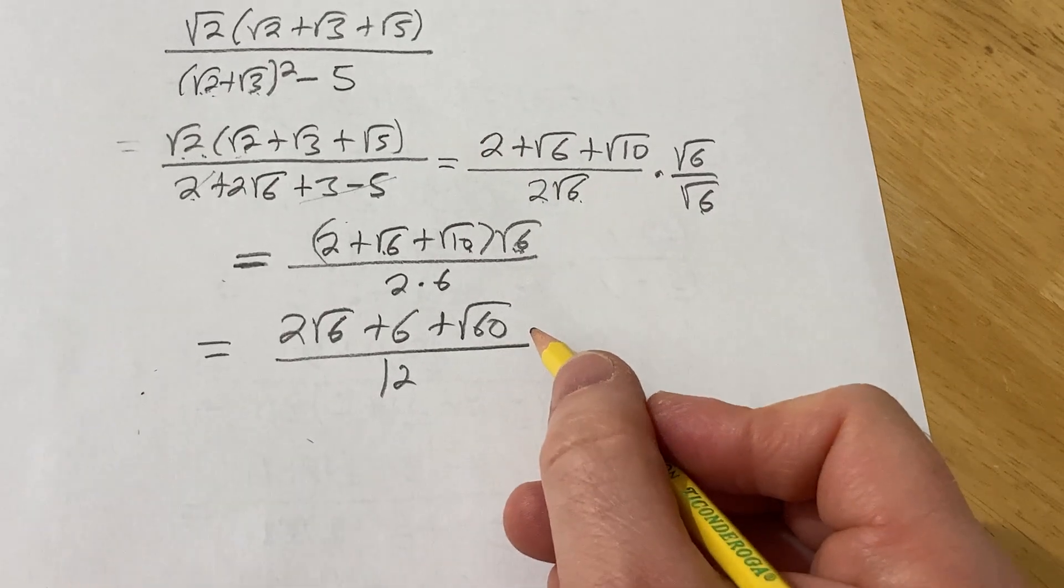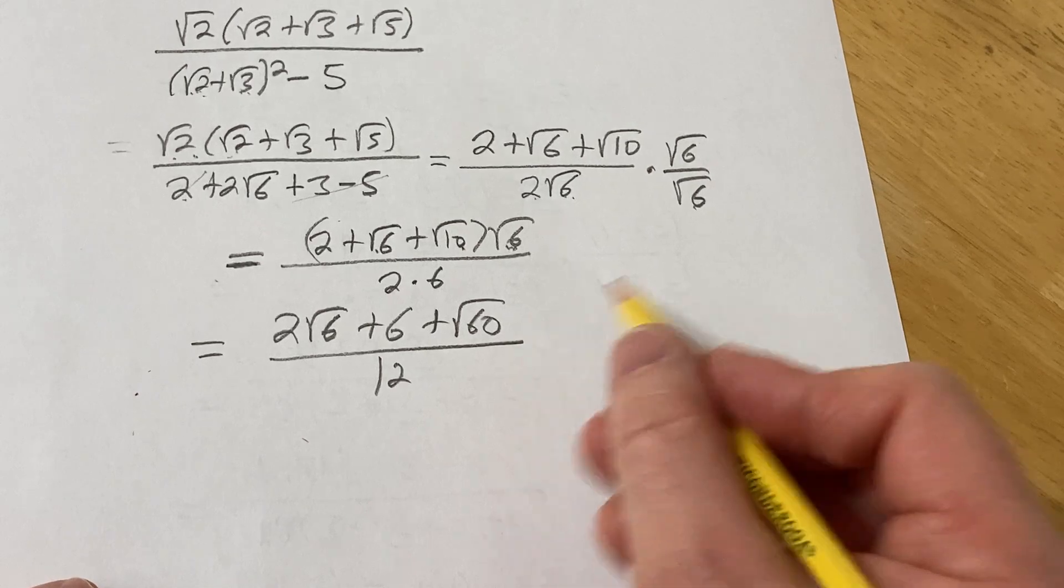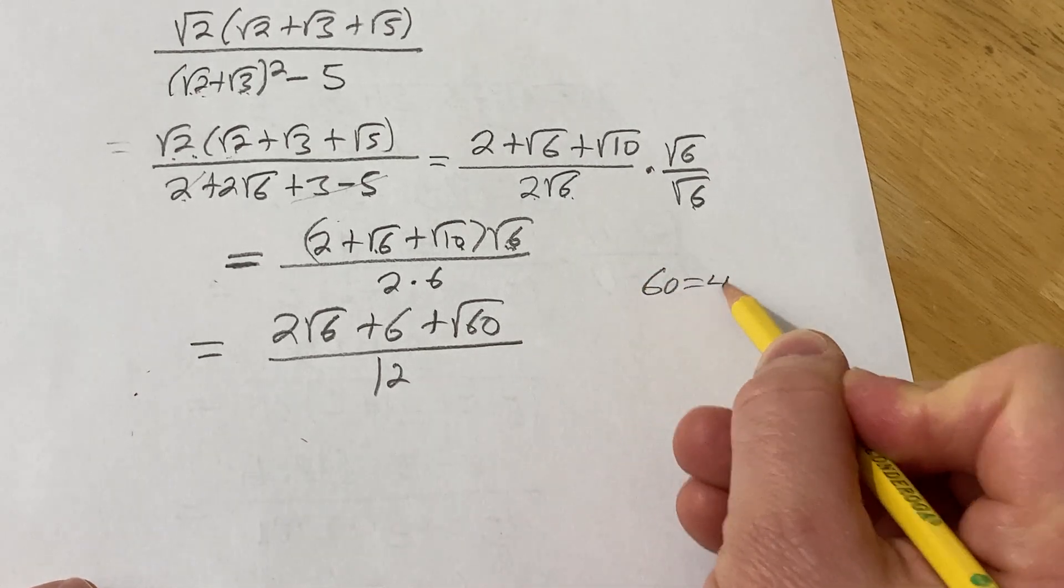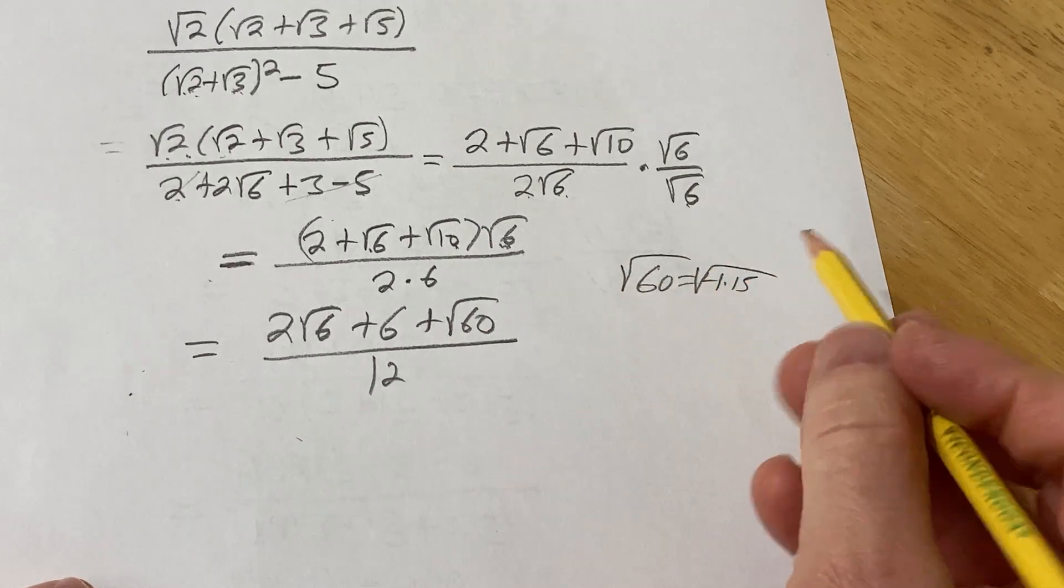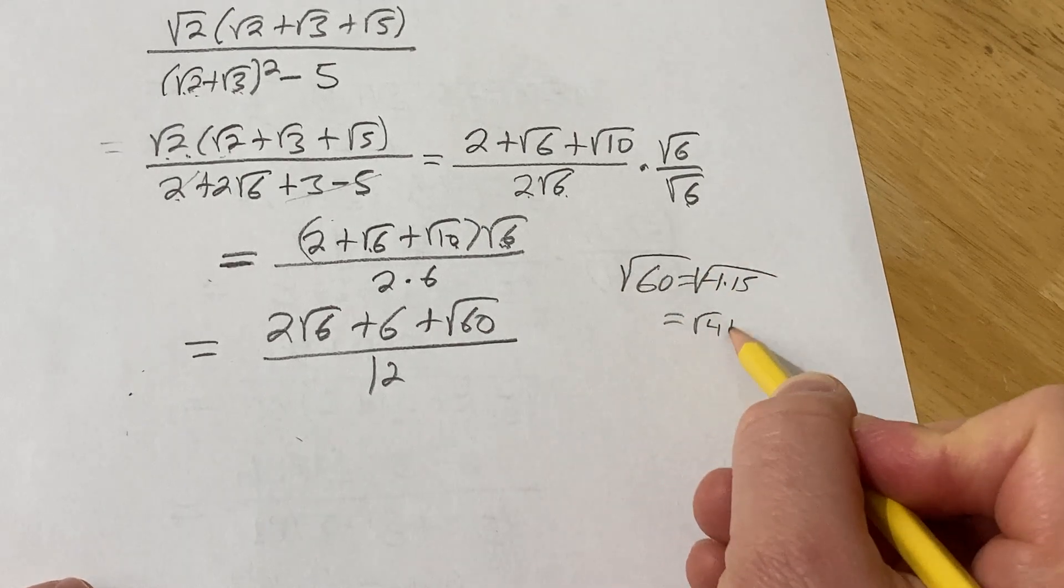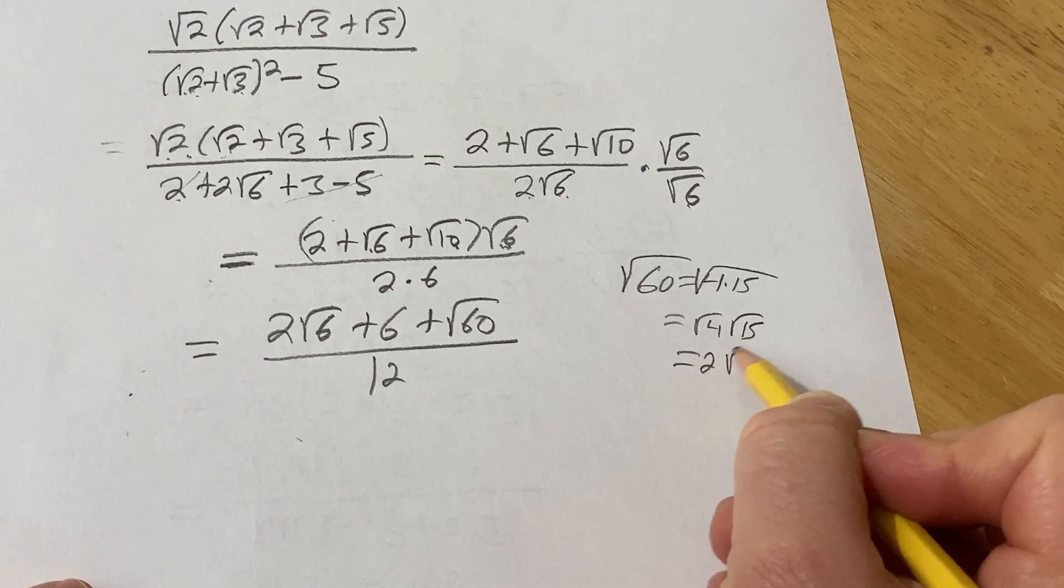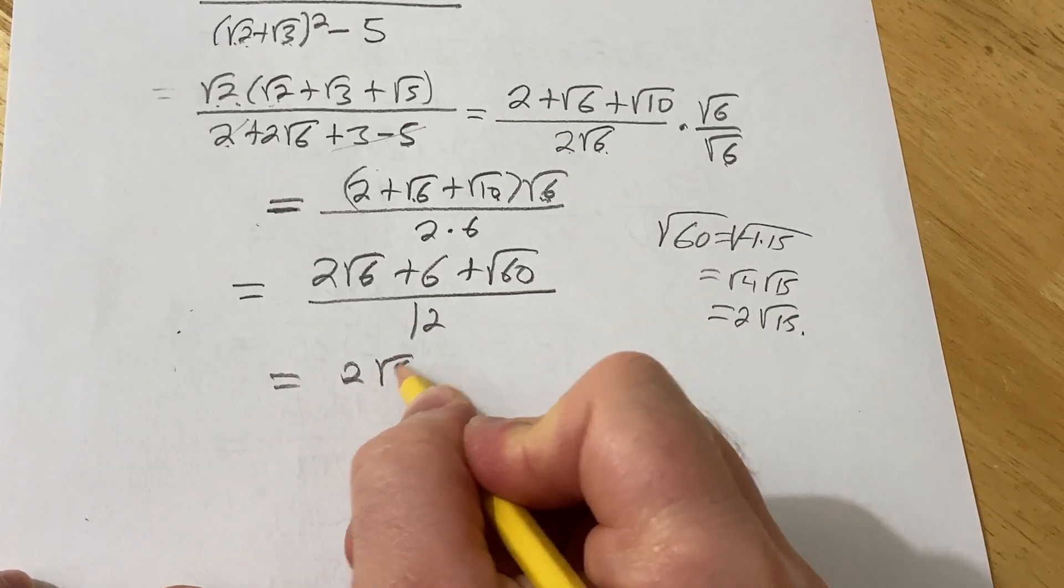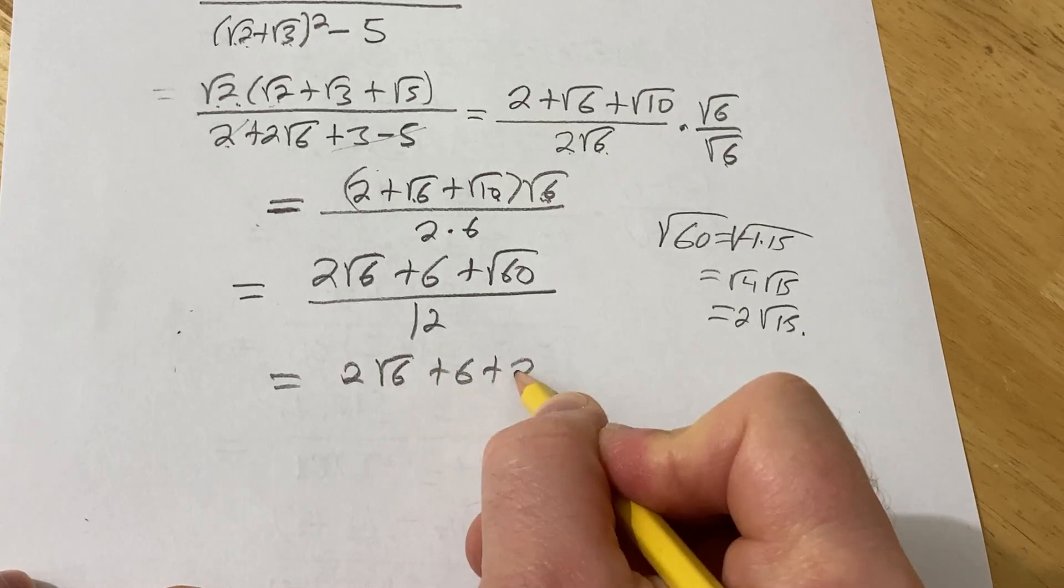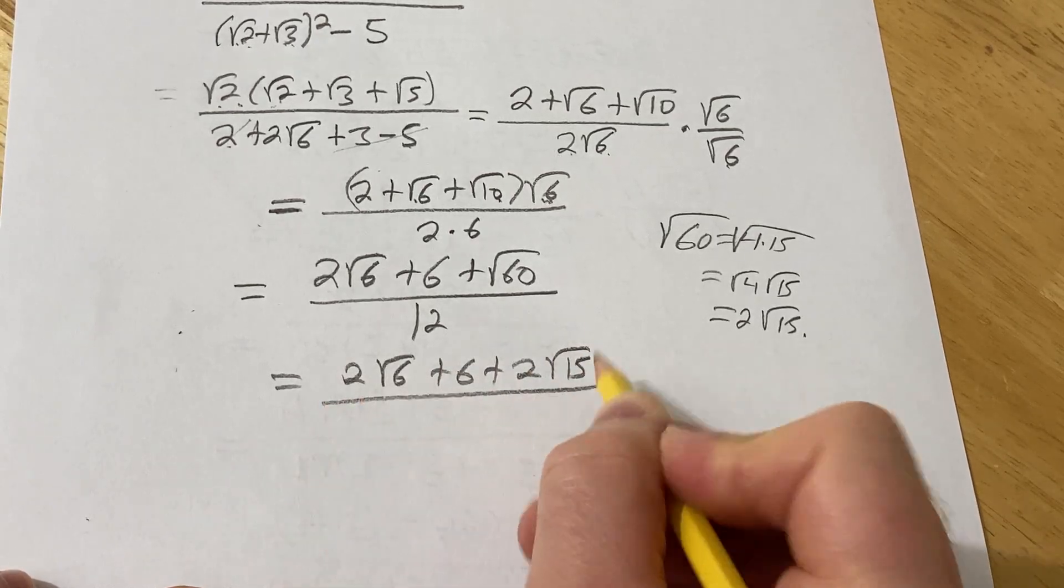Let's think about the square root of 60. I think we can do better than that. 60 is equal to 4 times 15. So the square root of 60 is the square root of 4 times 15, which is square root of 4, square root of 15, which is 2 root 15. So let's go ahead and write it that way. So this is 2 square root of 6 plus 6 plus 2 root 15 over 12.